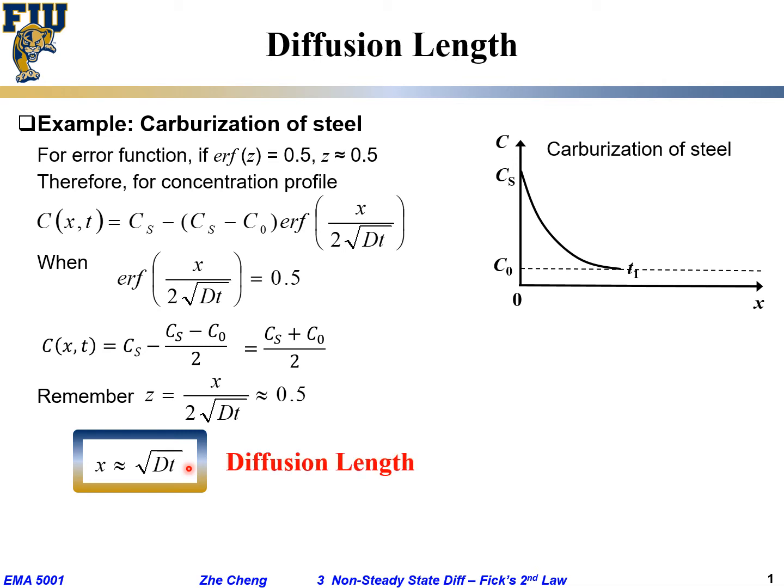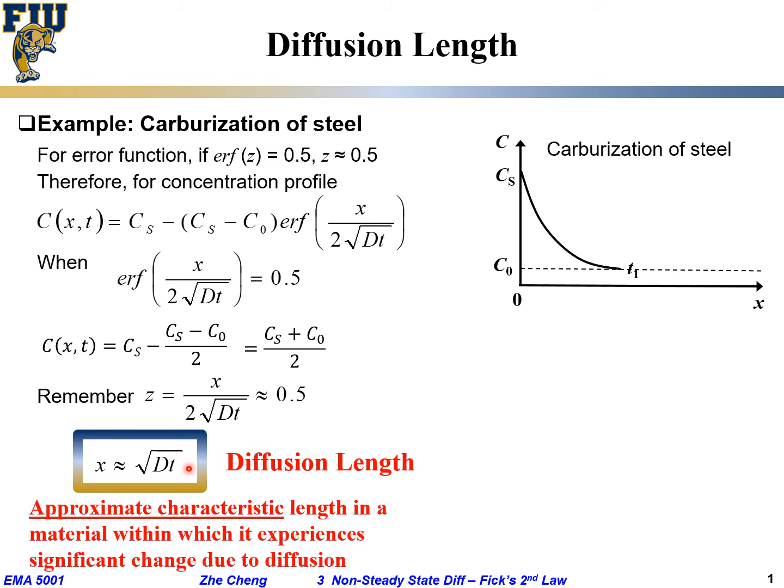This equation people call diffusion length, which is a very important concept. It indicates what? I want you to read to yourself. First word, very important, approximate. It's not a precise number. Diffusion length is approximate characteristic length, and what does that length mean? It means within that length, the material experienced or got significantly impacted by the diffusion.